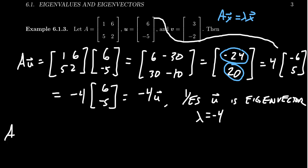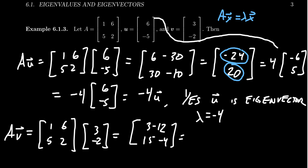What about the other vector, A times V? If we do the matrix multiplication this time with A = [1, 6; 5, 2] times V = [3, -2], we get 3 minus 12 and 15 minus 4. Simplifying that, we get -9 and 11 as our vector product.